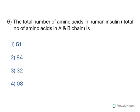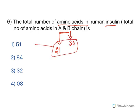The total number of amino acids in human insulin: human insulin has two chains, A chain and B chain. The A chain has 21 amino acids and the B chain has 30 amino acids, giving a total of 51 amino acids.